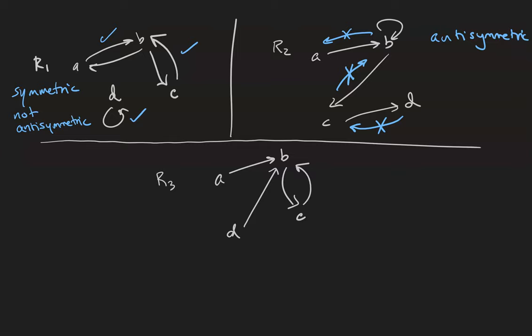The relation R3 relates A to B, D to B, C to B, and B back to C. This relation contains some anti-symmetric pairs such as (A,B), and it also contains some symmetric pairs such as (B,C) and (C,B). So for that reason, it is neither symmetric nor anti-symmetric.